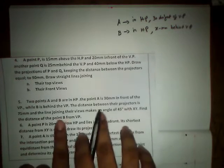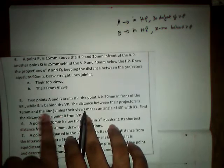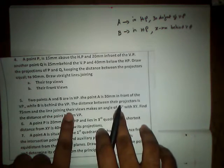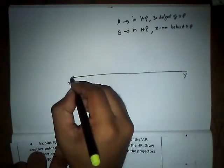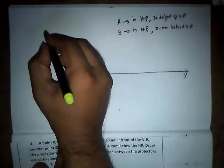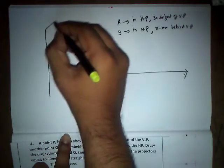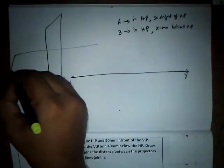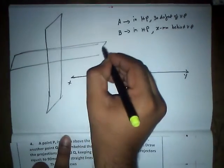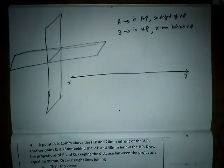The distance between the projectors is 75mm, and the line joining their top views makes an angle of 45 degrees with the XY reference line. Let us consider this is going to be our XY reference line.